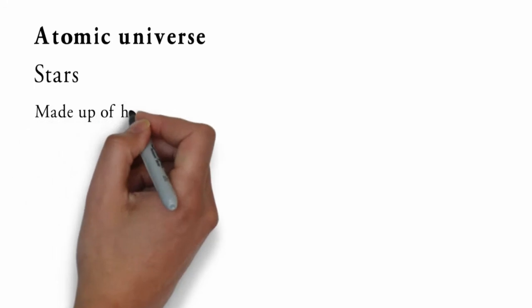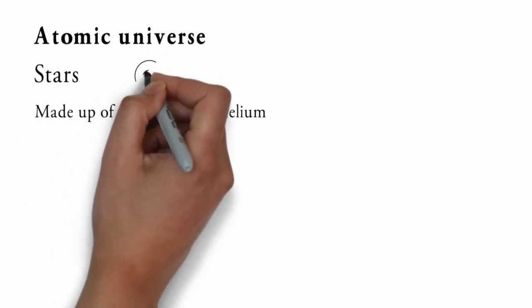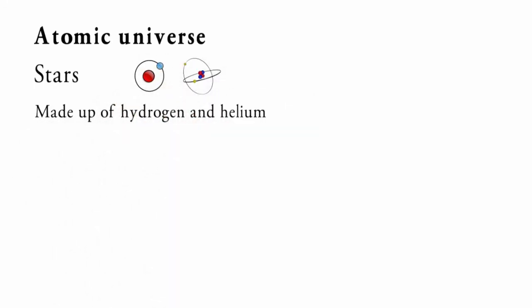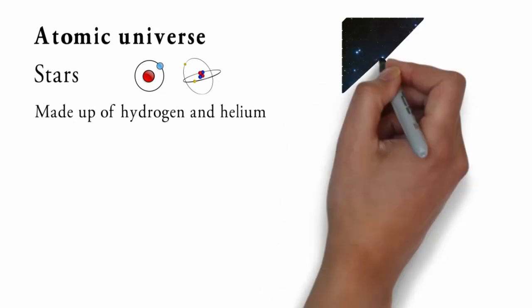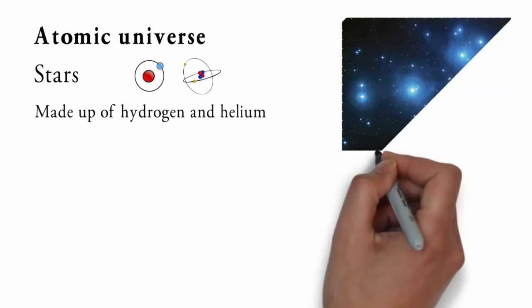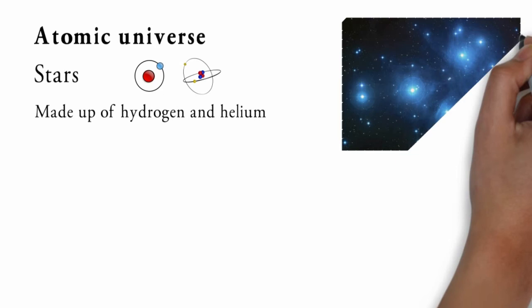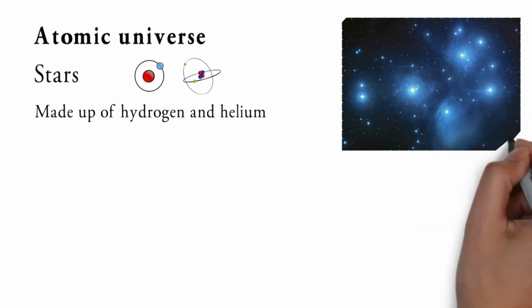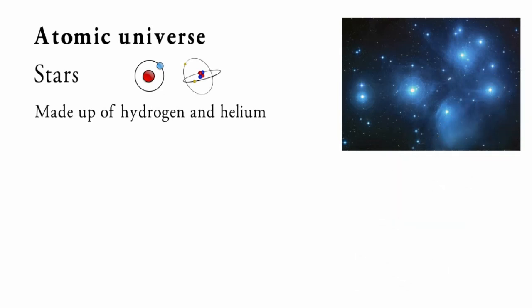Stars are usually made up of lighter elements like hydrogen and helium, and some other elements like carbon, nitrogen, oxygen and iron. Heavier elements are mostly created by stars that exploded before them. The fusion of lighter elements like hydrogen and helium gives rise to heavier elements like carbon, nitrogen, oxygen and iron.